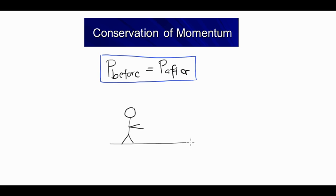Imagine they're wearing ice skates and holding hands, and they're stationary, which means initially their velocity is equal to zero. This one here has a mass of 50 kilograms, and the other person has a mass of 70 kilograms.